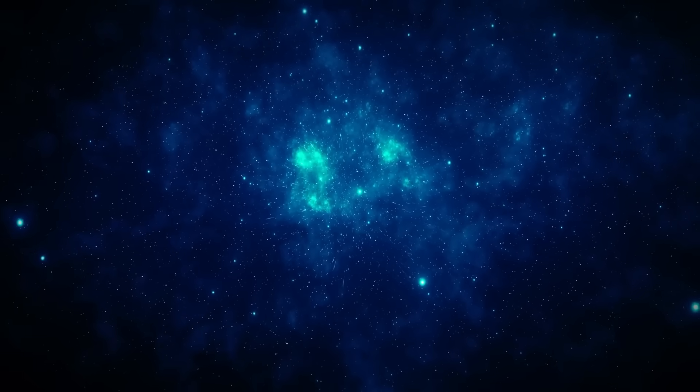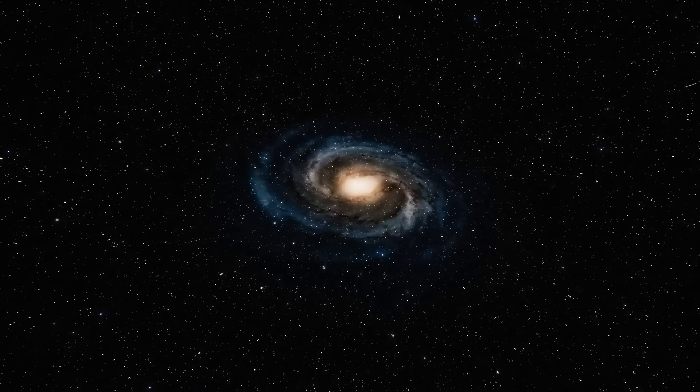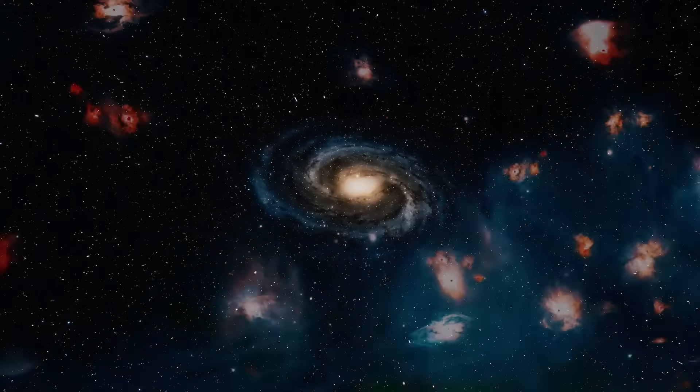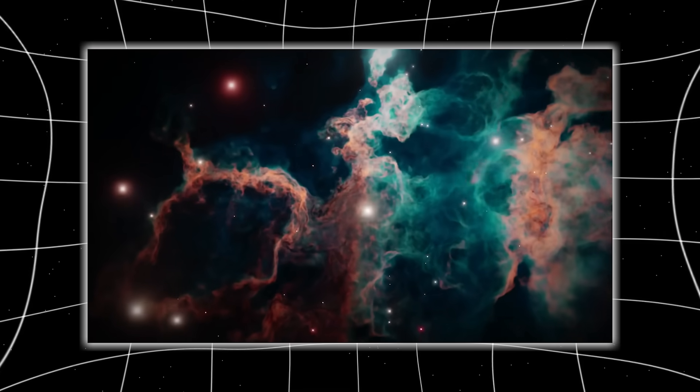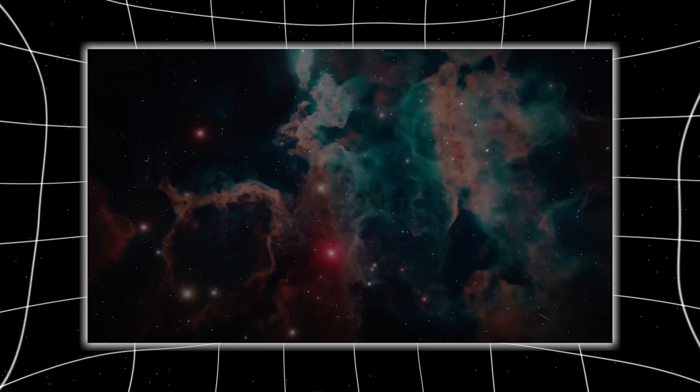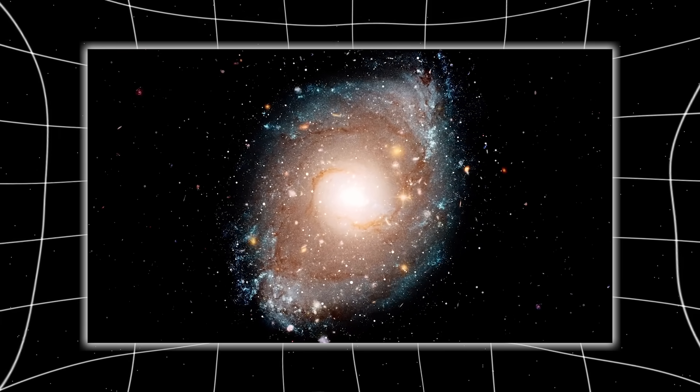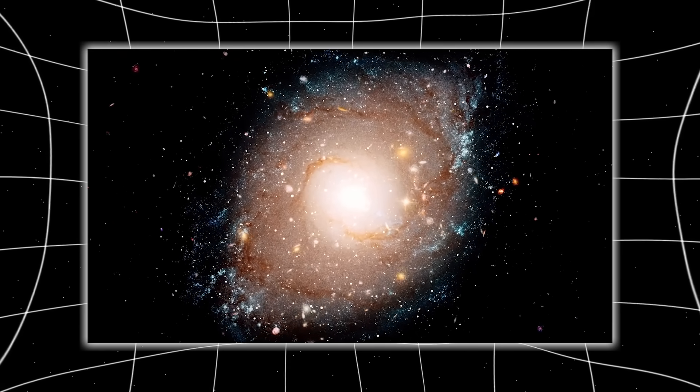We used to believe interstellar space was uniform, a neutral expanse of particles randomly dispersed across millions of light years. But Voyager 1 is revealing something vastly different, something dynamic. Think of it not as a void but as an atmosphere, one with pressure zones, eddies, and even storms. As it pushes farther into the galaxy, the spacecraft has encountered what scientists now call interstellar weather.